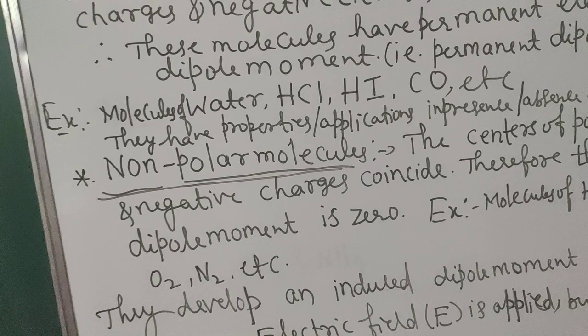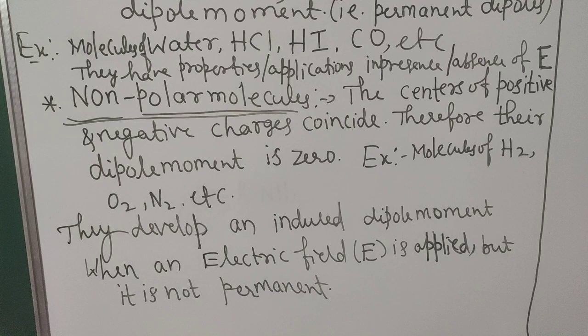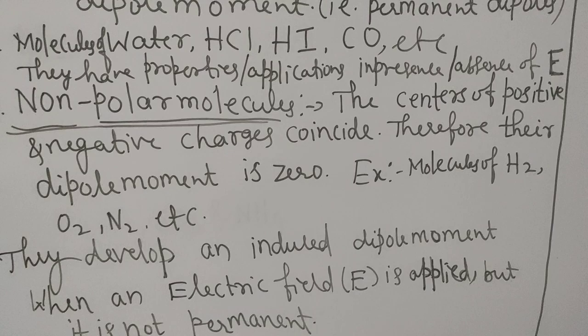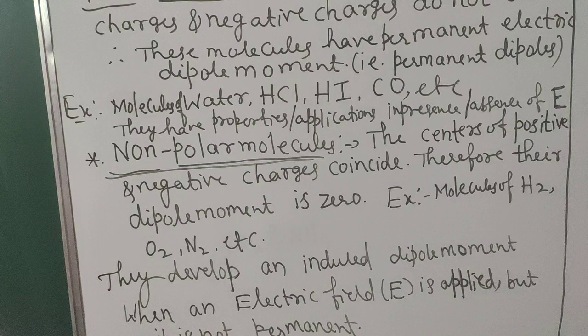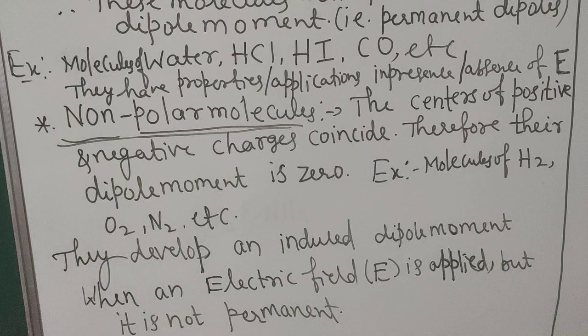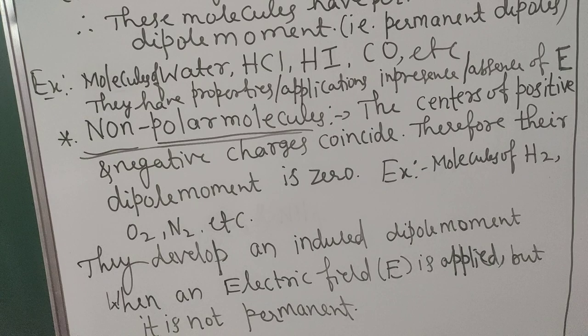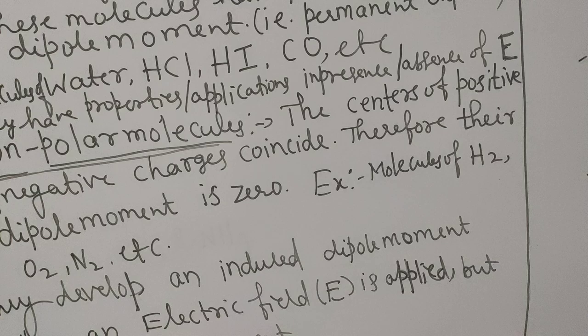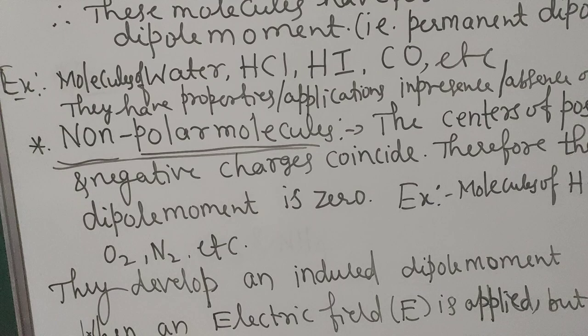The second type is non-polar molecules. In non-polar molecules, the centers of positive and negative charges coincide. Therefore their dipole moment is zero. Why is dipole moment zero? P = Q × 2a. Q is present, but 2a (the separation) is zero, and hence dipole moment is zero. Examples: molecules of H₂, O₂, N₂, etc.